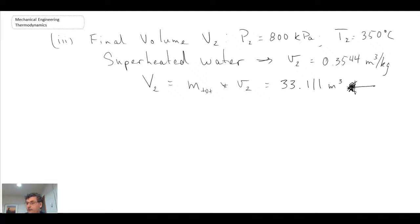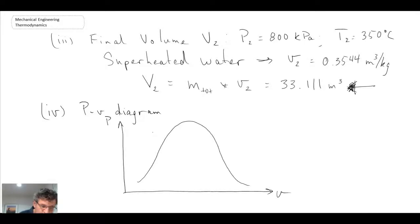And finally what they wanted us to do is they wanted us to sketch the process on a PV diagram. So for that, what we can do, we write out our pressure, specific volume.